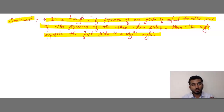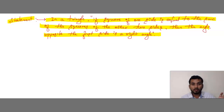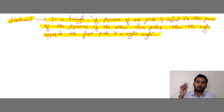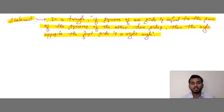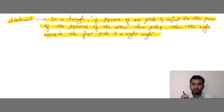In the original Pythagoras theorem, we took a right-angled triangle and proved that the square on the hypotenuse equals the sum of the squares of the other two sides. But here it is completely opposite: we are given the squares of the two sides and have to prove the square of the hypotenuse, so that we can say the corresponding angle is 90 degrees. Remember, if the angle is 90 degrees, then it is Pythagoras.